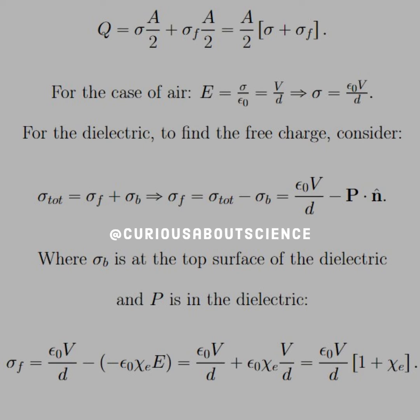For the air side, we know that the electric field equals sigma over epsilon naught, but it's also equal to the potential difference over d, and then solving for sigma gives us epsilon naught V over d.